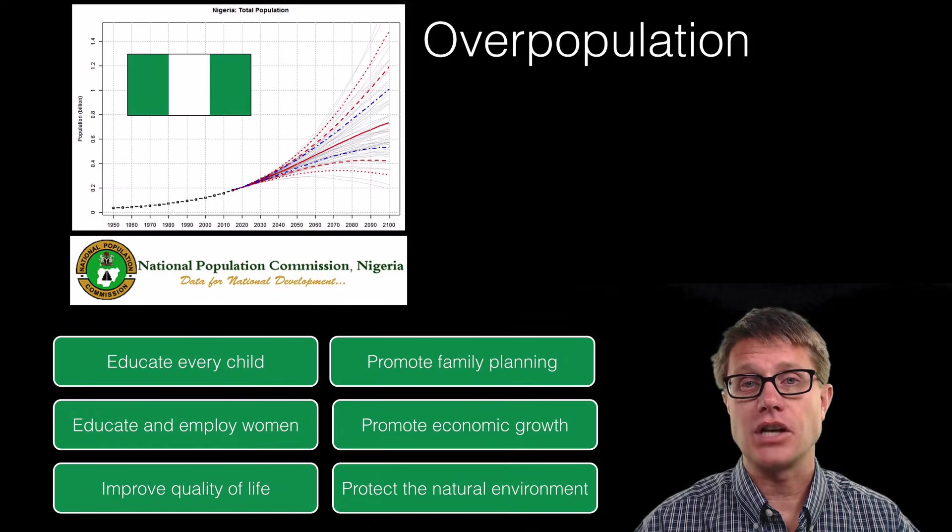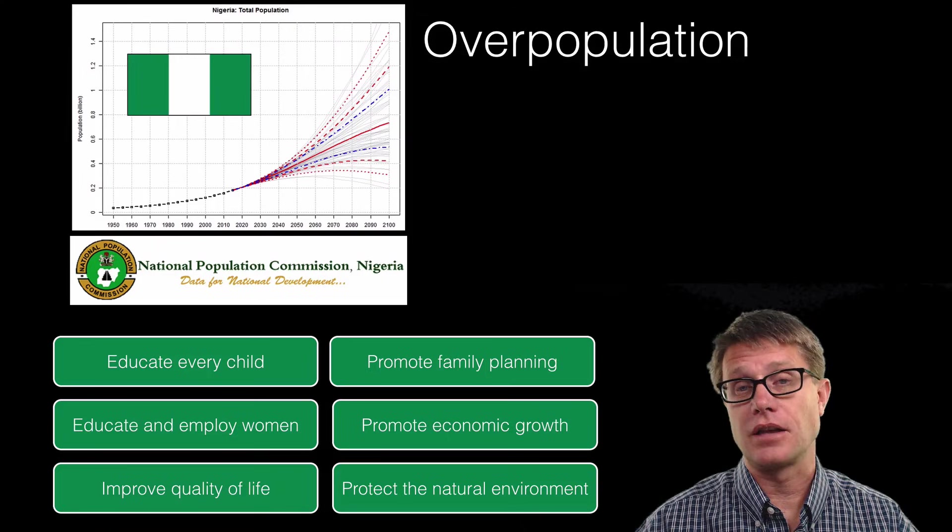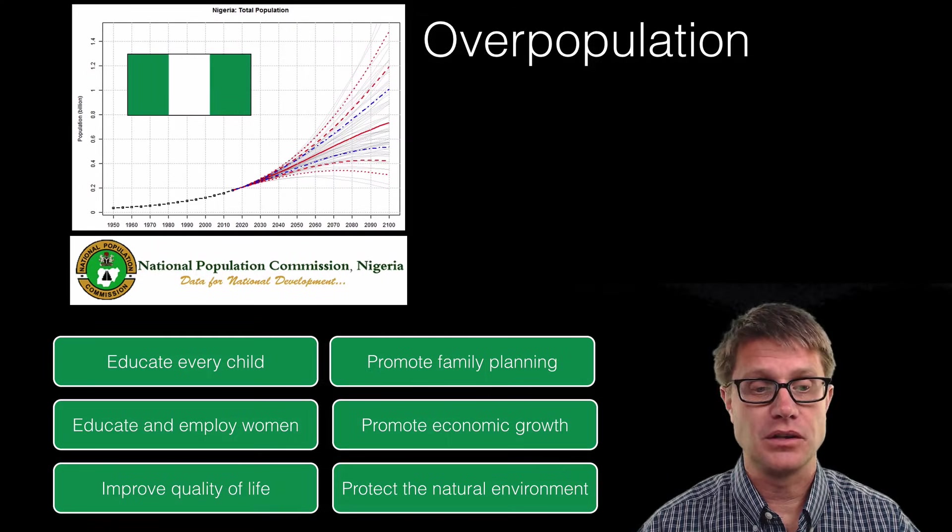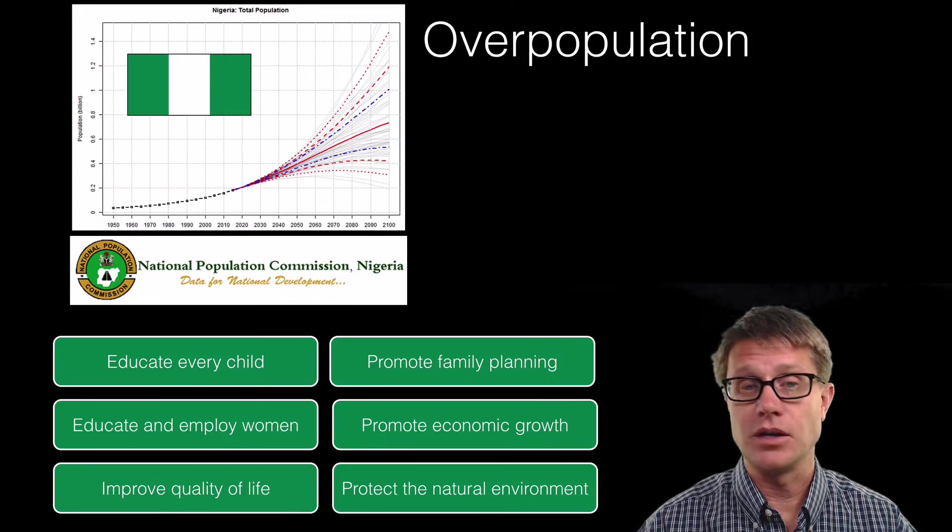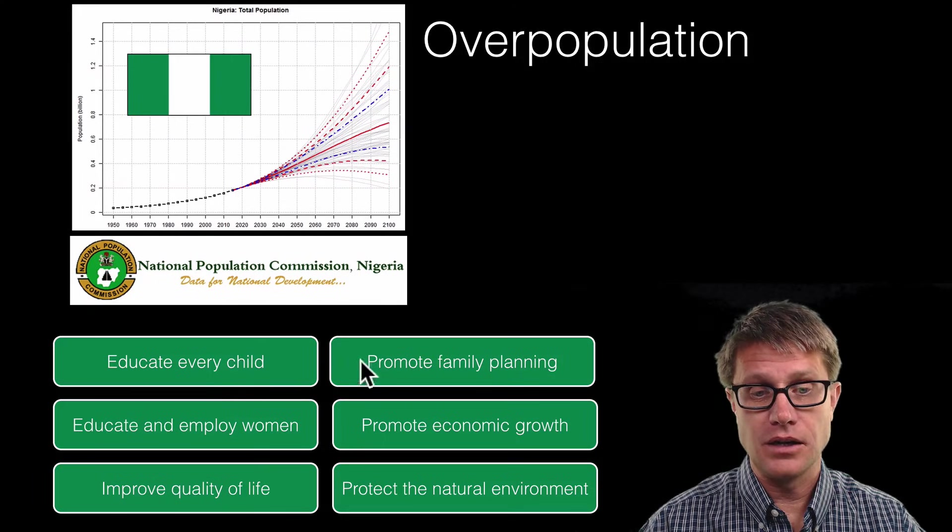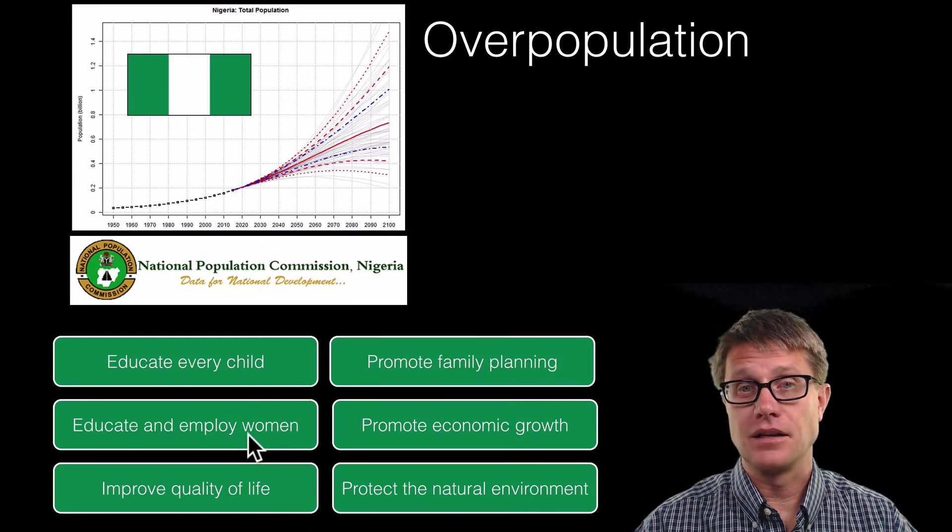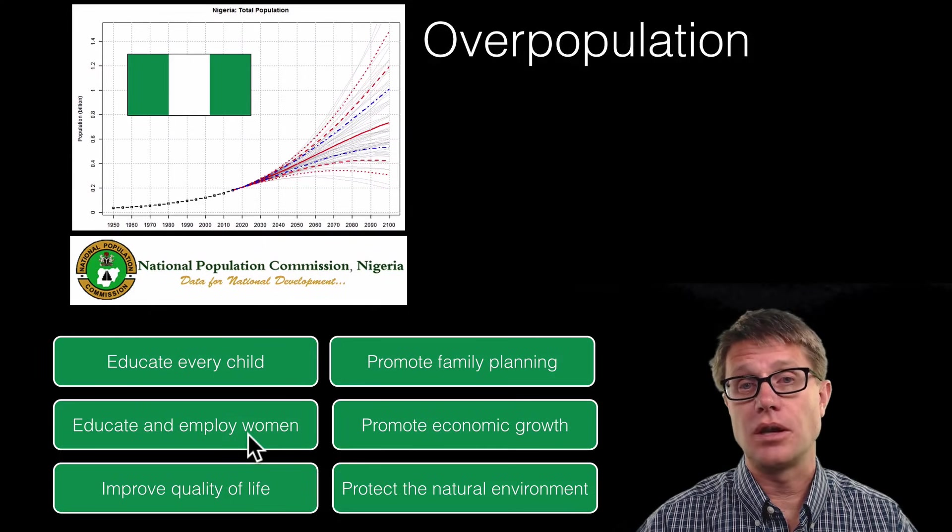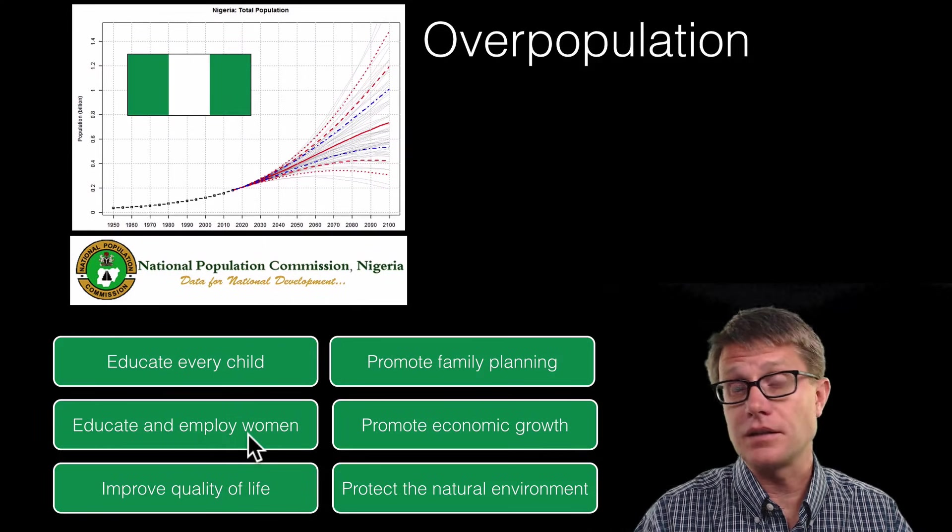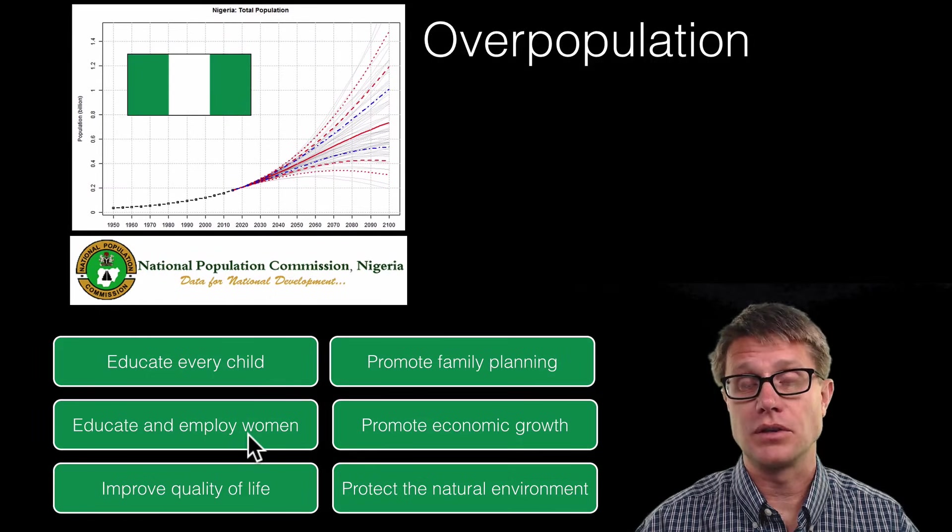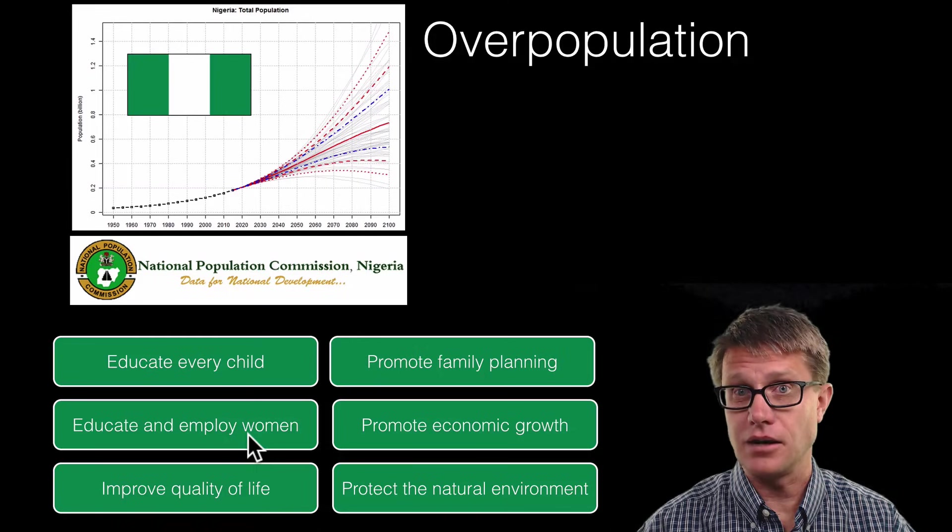We need to number one, educate every child. Promote family planning. In other words, allow birth control to be accessible to all people in their population. Especially educate and employ women. Now these three things right here are super important. Because if women are not educated, if they are not employed, what do they do when they become adult? Well a lot of the time they will get married and start having kids. And that is just going to lead to an increase in the population over time. We have got to get that fertility rate down.